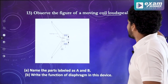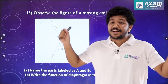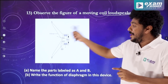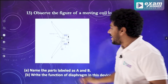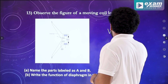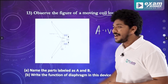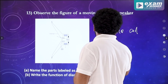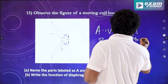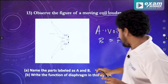Observe the figure of a moving coil loudspeaker. This question is about labeling. I am going to say live in this labelling session. These are the same parts. The first part is the voice coil. What is the field magnet? These are the same questions.